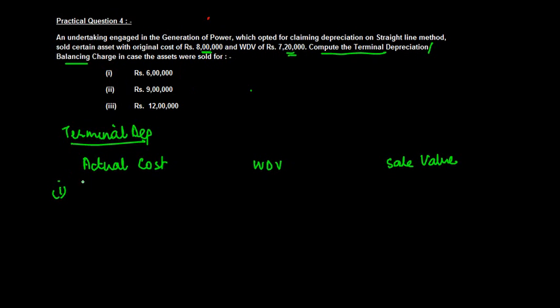In case 1, the actual cost was 8 lakh, written down value is 7 lakh 20,000, and the value for which it is sold is 6 lakh. In these cases, the first thing you need to do is compare the written down value with the sale value.